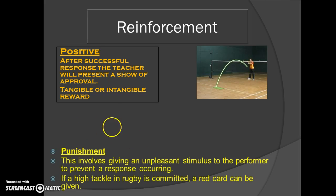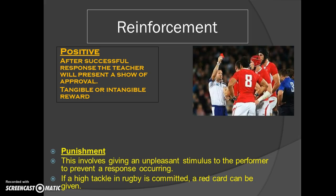Punishment involves presenting an unpleasant stimulus to the performer to prevent a response occurring. For example: high tackle — you get a red card. A coach shouting at you, or showing signs of disappointment, is a punishment. Losing points within a game for foul play is another example.